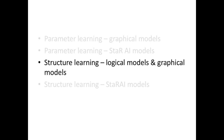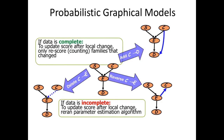Now let's talk about structure learning. We'll briefly revisit graphical models, then logical models, before discussing Star AI probabilistic logic models. For probabilistic graphical models with complete data, you start with some structure — say S and C influence E, which influences D — and then apply three operations: delete an edge, add a new edge, or reverse an existing edge. This is a search-and-score approach: you search over operators and score the resulting model.